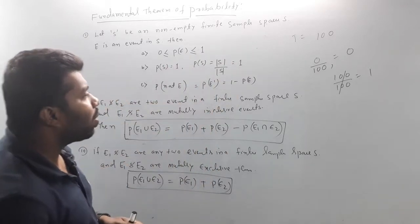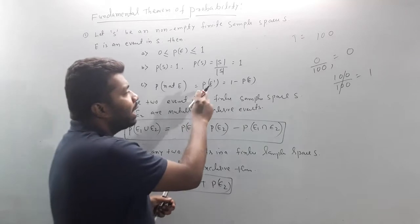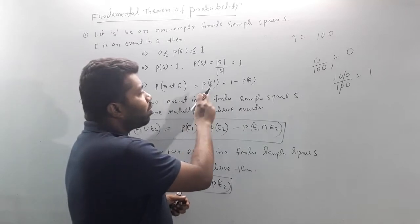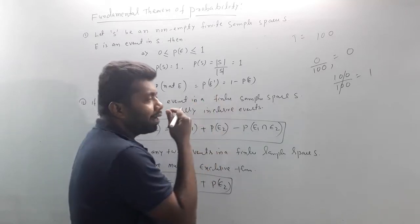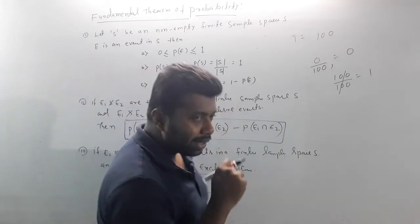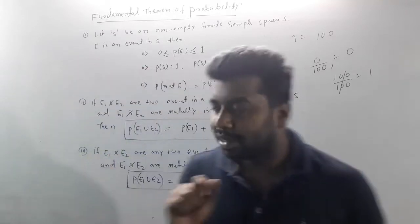Next, P of not E. So not E — P of not E is equal to 1 minus P of E. Let me put an example here.